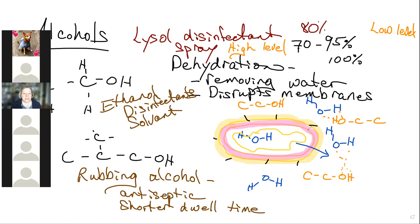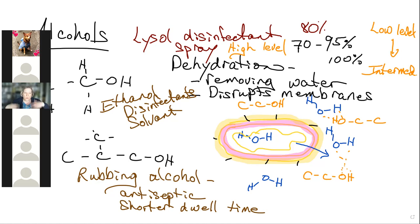A student asks about a discrepancy: the book says alcohol is intermediate level, but the instructor said low level. The explanation: it depends on how long you can keep it on surfaces. Rubbing alcohol dries very quickly, so it has a much shorter dwell time. The book averaged across formulations.